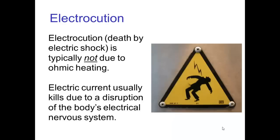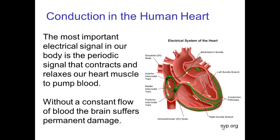Having talked about ohmic heating, you might wonder if that is the cause of death by electric shock, known as electrocution. It turns out that typically ohmic heating is not the cause of death; rather, the electric current is usually fatal because it causes a disruption of the body's electrical nervous system. The most dangerous part is if it disrupts the electrical signal which contracts and relaxes the heart muscle. The heart muscle is controlled by an internal pacemaker that has to operate constantly, since if the heart doesn't pump, the lack of blood flow to the brain causes permanent damage in a matter of minutes.